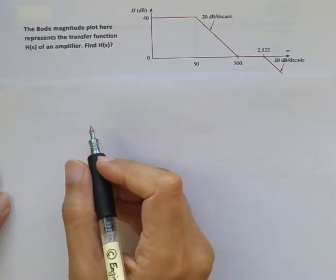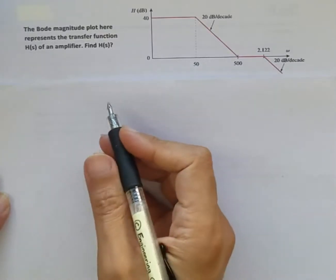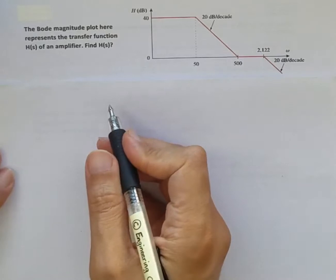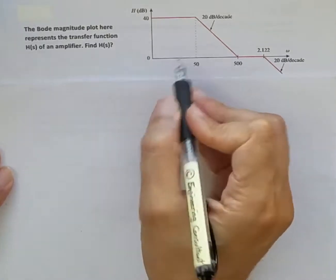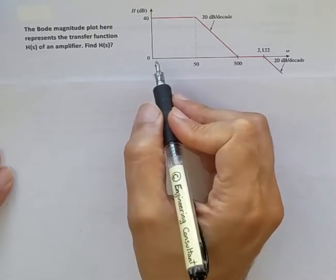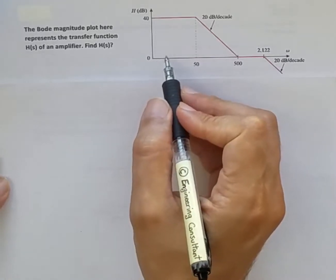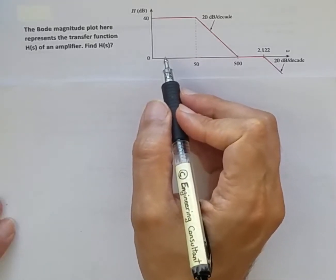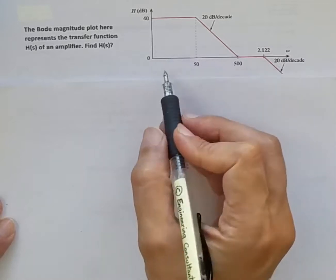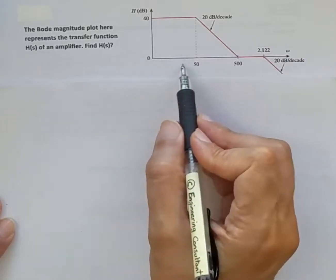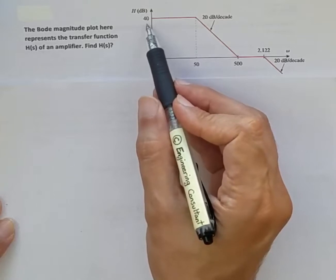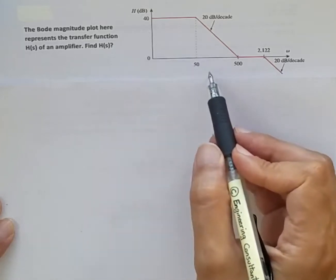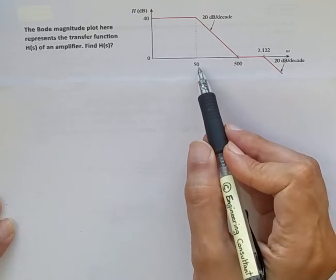The Bode magnitude plot shown here represents the transfer function H(s) of an amplifier. Find H(s). Looking at this Bode plot, we can see it's representing a low-pass filter because the low frequency components are passed with a constant gain of 40 dB.